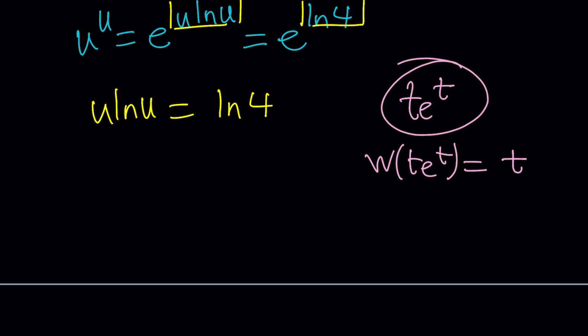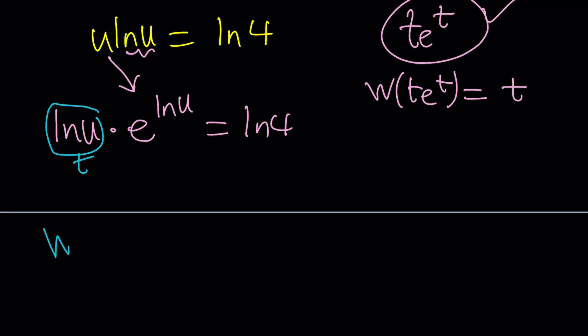Now here's what I'm going to do. I'm going to write this first ln u and then u will be replaced with e to the power ln u. You know why? Because I want to turn it into t e to the t. That's why. And now it is. This is my t and obviously I have t e to the t and if I apply Lambert's w function on this it's going to turn into ln u.